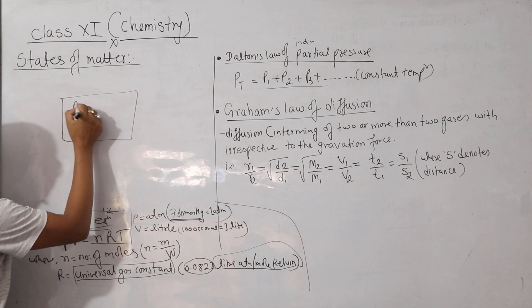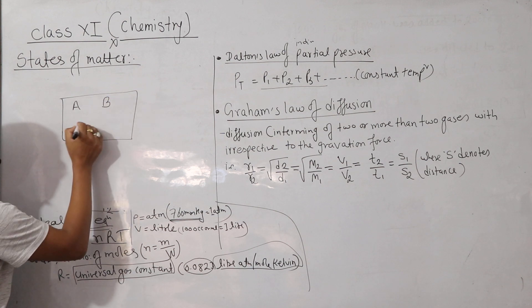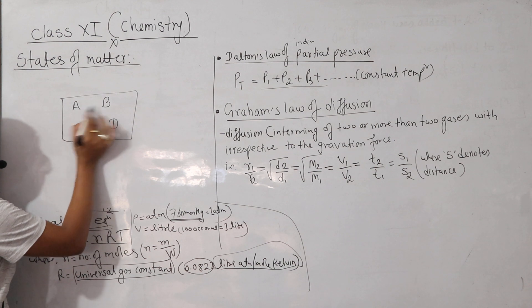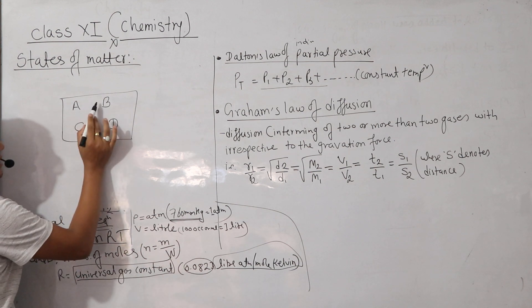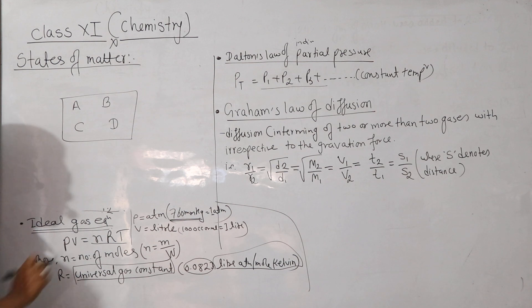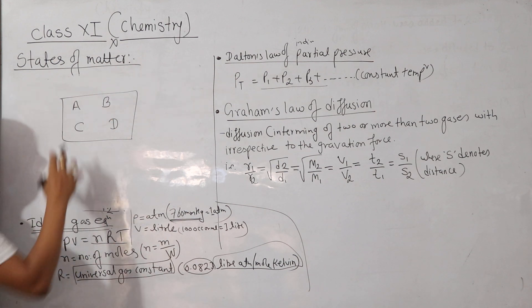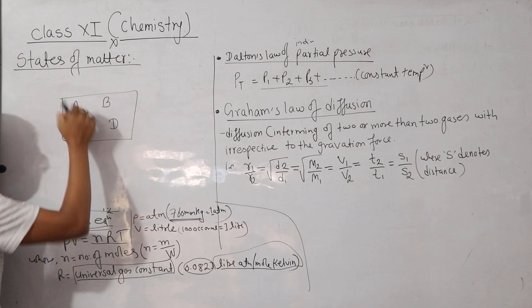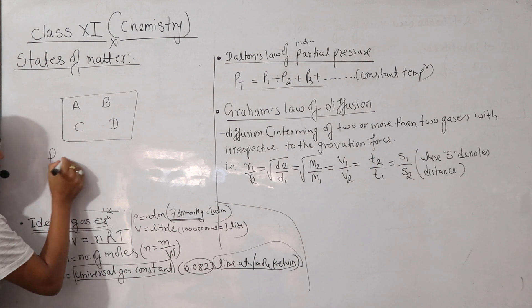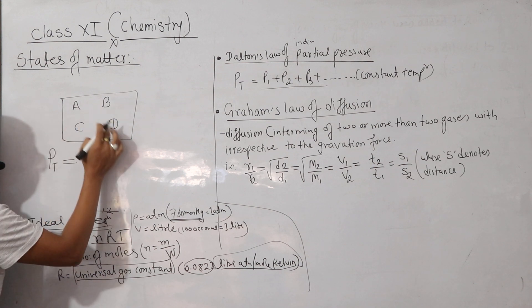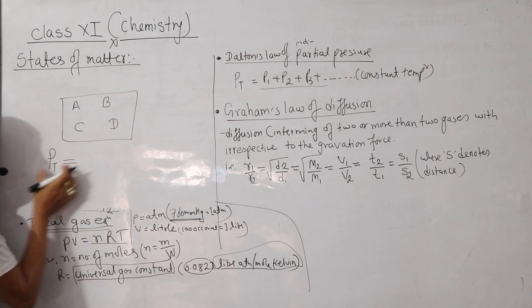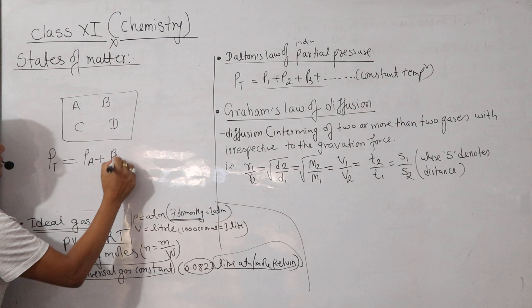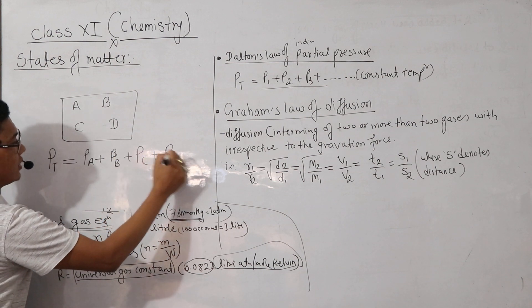Let's take an example. In this example, A has gas, B has gas, C has gas, D has gas. This gas will react with each other. If you create a product, the product will be produced. So in this gas, the total pressure is: pressure of A plus pressure of B plus pressure of C plus pressure of D.